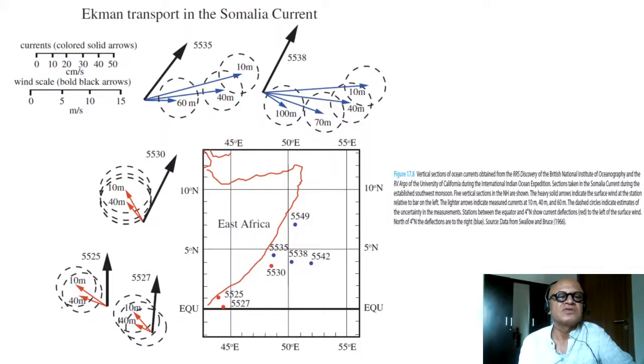This is true, and you can see this very nice example of how that may be working. This is data from way back in 1968 from Bruce Swallow and Warren. It's really amazing—look at these sites. Winds are blowing this way in each case. This is what you would expect the transports at 10 meter, 40 meter, 60 meter.